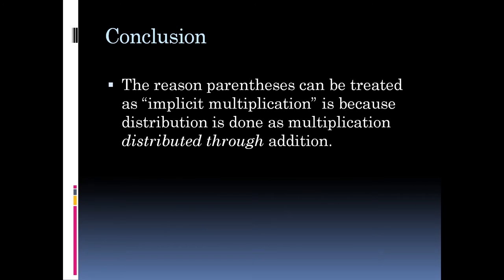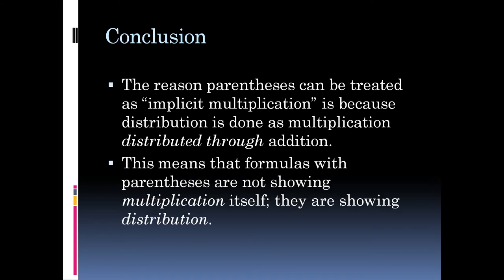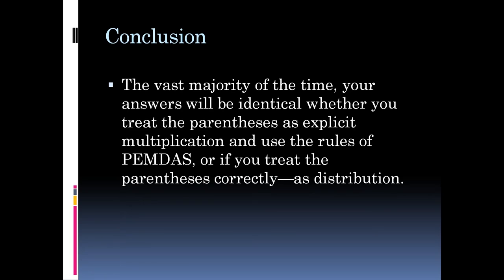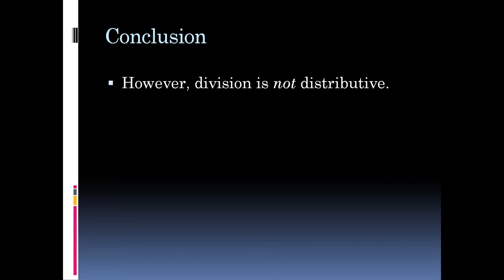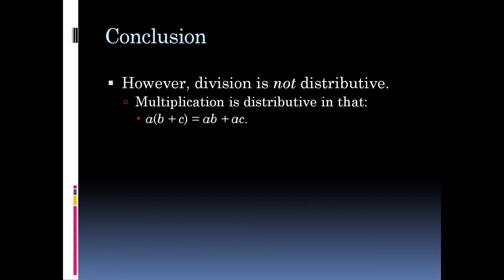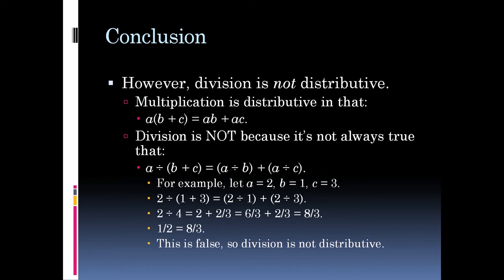So we can see these are equivalent. The reason parentheses can be treated as implicit multiplication is because distribution is done as multiplication distributed through addition. The formulas with parentheses are not showing multiplication themselves — they are showing distribution. The vast majority of the time your answers will be identical whether you treat the parentheses as explicit multiplication using PEMDAS, or treat them correctly as distribution. However, division is not distributive — this is key. Multiplication distributes: a(b+c) equals ab+ac. That is the law of distribution.